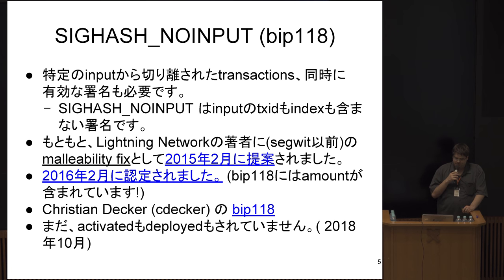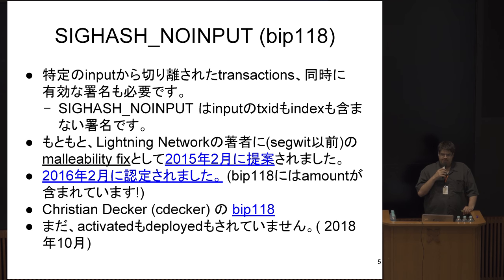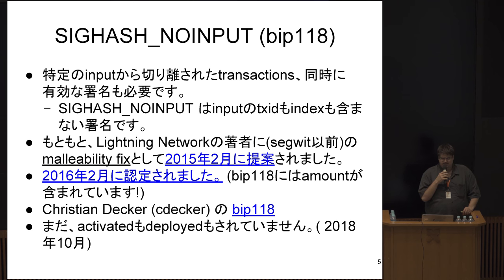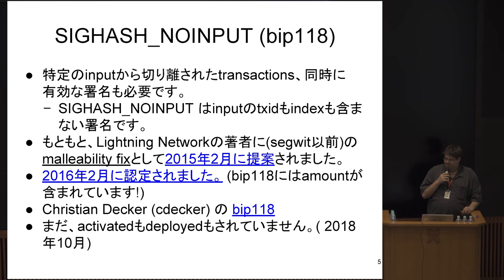Specifically, SighashNoInput works by not caring what specific input is being provided — you don't care what the transaction ID is that provides the input. However, you do care about the amount. Very early on in 2015, this was actually proposed as a malleability fix before SegWit was proposed as a malleability fix. The problem is that SighashNoInput is actually somewhat dangerous, especially in the context of a malleability fix, so it was not selected by the community. SighashNoInput was set aside and then we got SegWit.